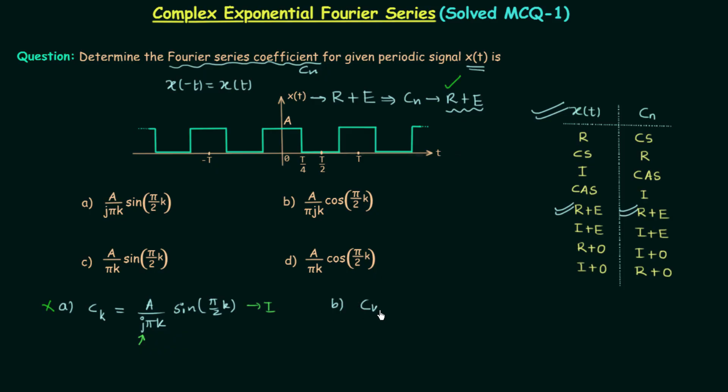Now we will move to option B. In option B, CK is equal to A over pi*j*K. Here we have cos in place of sin. So we have cos(pi/2*K). Again we have j in the denominator, so CK is imaginary therefore option B is the incorrect option.